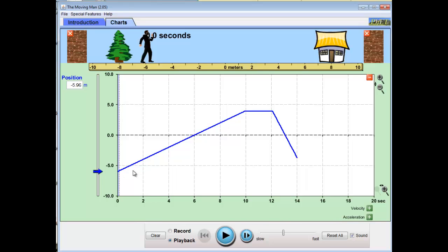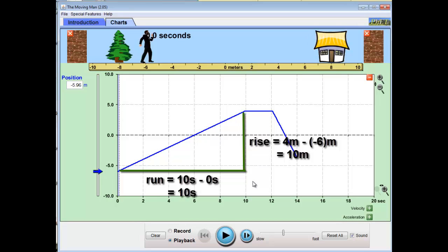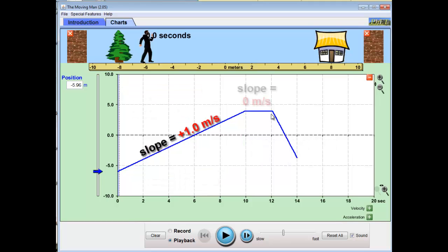The slope literally is the velocity. In the first region, the rise goes from 4 meters down to negative 6, so our rise would be 10 meters, and our run is 10 seconds, making the slope 10 divided by 10. 1 meter per second is the speed or the velocity in that region, positive 1. Second region, we already know is 0. That was easy.